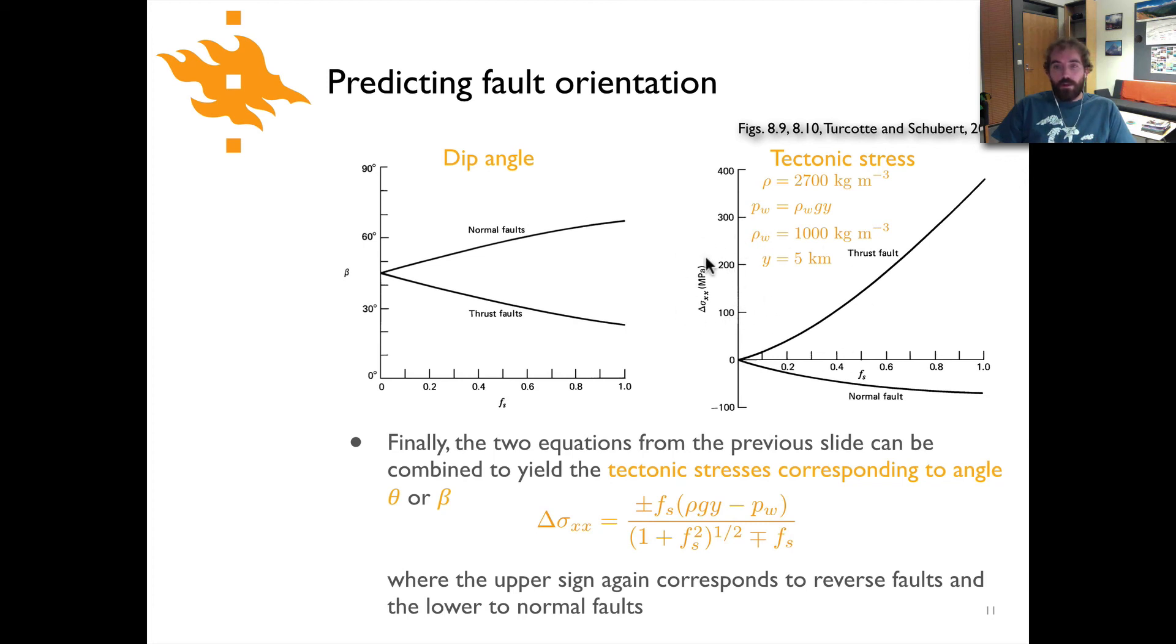We can also see here that the differential stress, the differential tectonic stress, if it's compared to the coefficient of friction you can see that for a thrust fault it gets very large, it gets much larger than the difference for the case of a normal fault where the differential stresses are relatively small. And so these are some useful ideas for being able to predict the orientation and the stresses that would be acting on different types of faults.